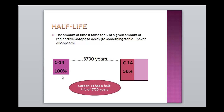We get Carbon-14 from the atmosphere, so every living thing is absorbing Carbon-14. Once it dies, it stops absorbing this, and we can compare it to the current amount of Carbon-14 in the atmosphere and get a reference of how long that organism has been dead. This should be from fossilized material and such. So again, Half-Life is the amount of time it takes for half of the given amount of radioactive isotope to decay. We have 100% here, 5,730 years went by, and now we have 50% of the original radioactive carbon left over.